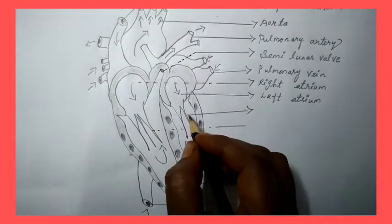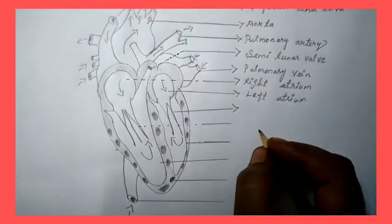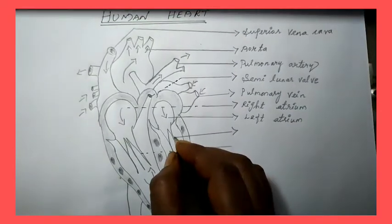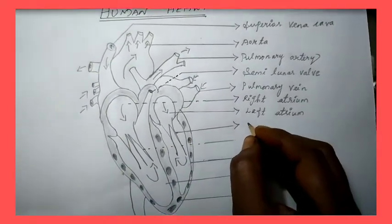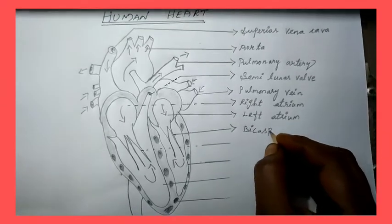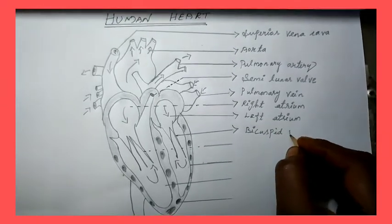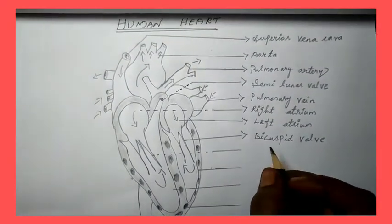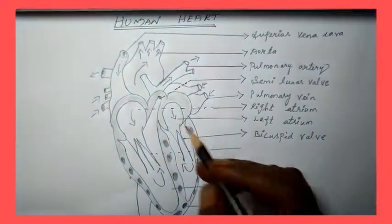Then, Ventricle. Ventricle here. First we write Bicuspid Valve. Write parts your choice, but where should you write, adjust and write.